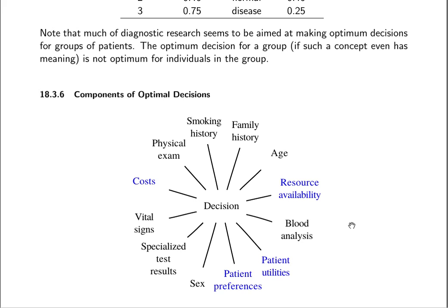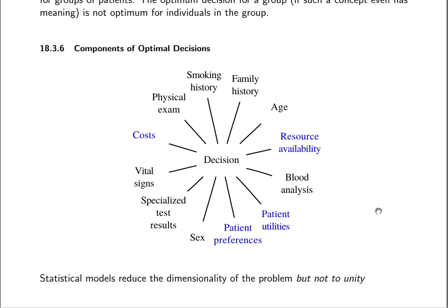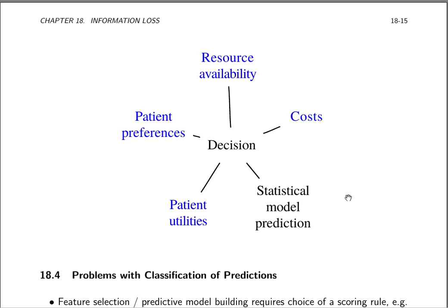In a typical biomedical research paper, the paper generally concerns itself with the variables in black, and that paper doesn't have access to resource availability, utilities, and costs. Statistical models reduce the dimensionality of the problem by taking those variables and putting them into a model for estimating the predicted probability of an outcome, a disease, or an expected blood pressure. That sort of prediction is a very nice mapping of many variables into one variable. But the true dimensionality of the problem is still not just one variable — variables in blue, and probably others, need to be taken into account. So the statistical model prediction is one variable, but these other variables are going to remain.